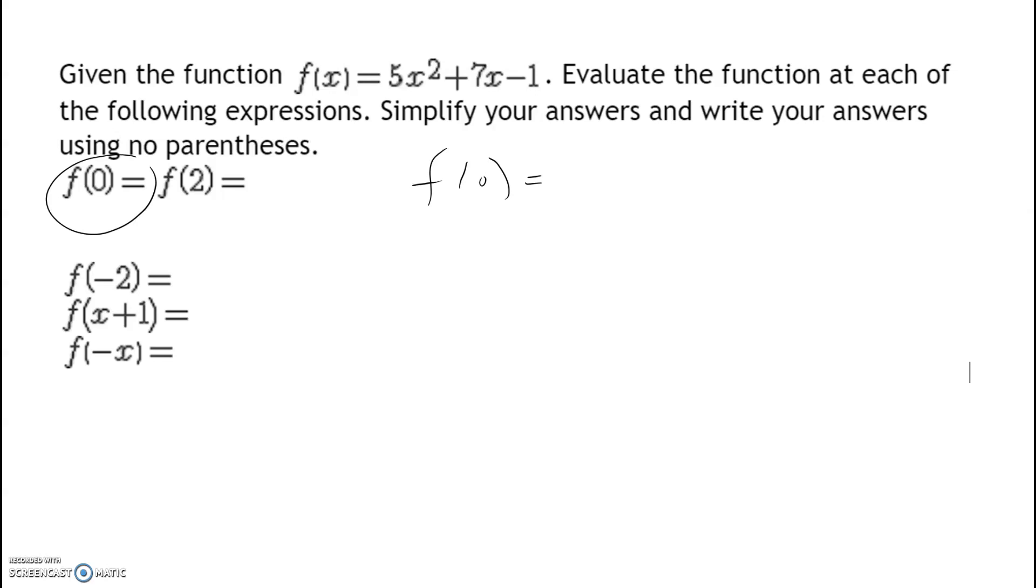f(0) means every time I see an X in my function, five times zero squared plus seven times zero minus one. That's zero, that's zero, that's equal to negative one, right?